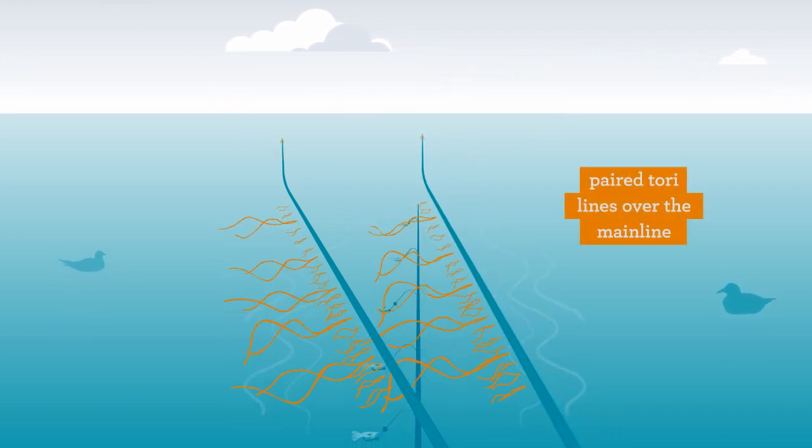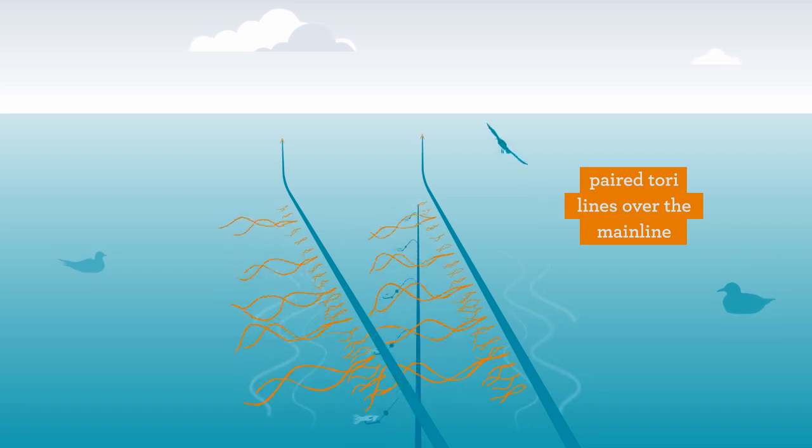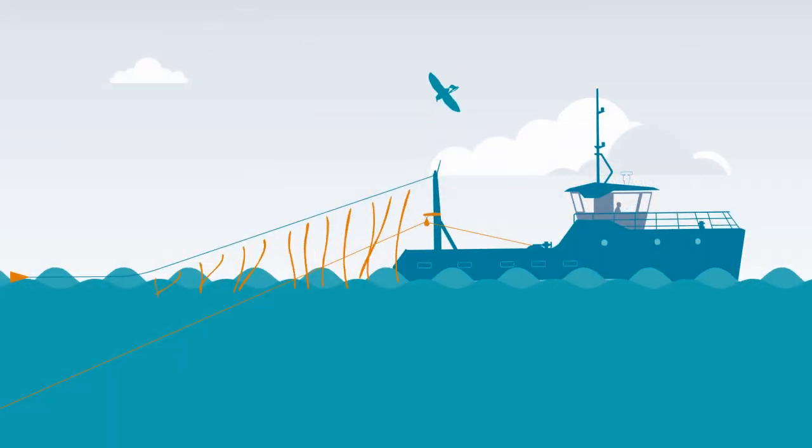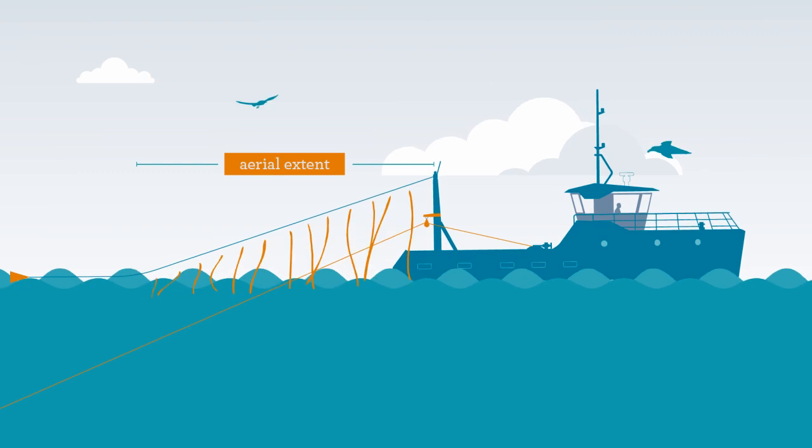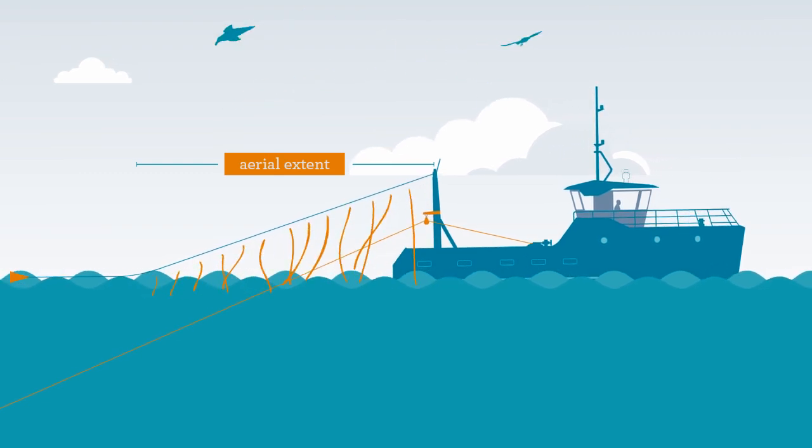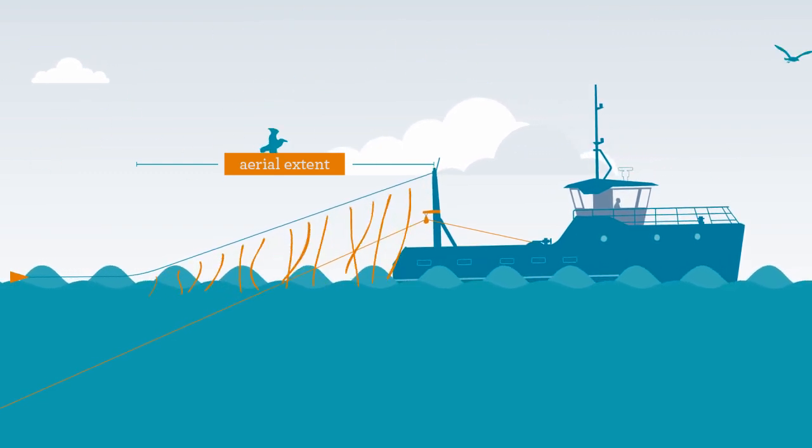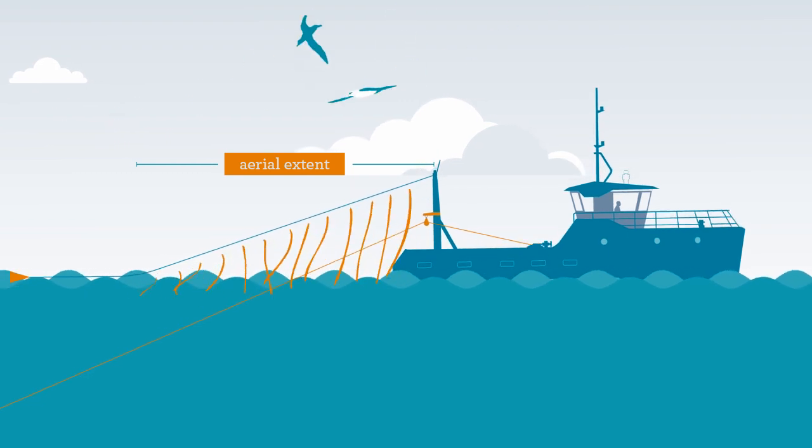An additional tory line will aid in providing more protection. It is considered best practice to maximise the aerial extent of tory lines to deter birds from the largest section of the line, both above and below the water.